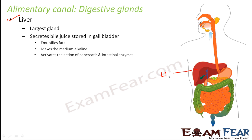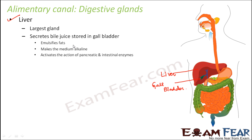The red colored structure you see here is the liver, and it secretes bile juice. The bile juice is stored in the gallbladder, which is the green colored structure visible here. The function of bile juice is to help in the digestion of fats.